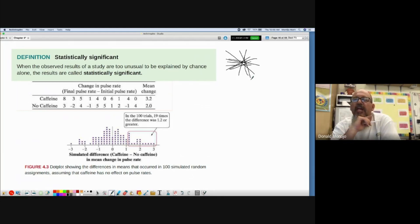We looked at a study where we took 20 students and measured their pulse rate. Then we gave 10 of them caffeine and the other 10 no caffeine. We took their pulse rate again and found the difference. That's what this table represents. The caffeine individuals had an average pulse rate increase of 3.2. The students that did not get caffeine had an average pulse increase of 2.0.